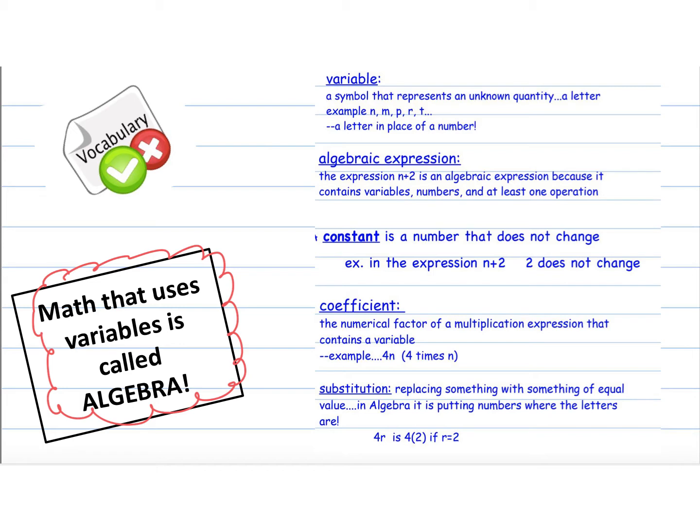So first word that I want you to write down is variable. Variable is a symbol that represents an unknown quantity, it's a letter. So a variable, you can just write letter, meaning it stands for a number. So example is x and any letters that are in the place of a number, and you will see that when we get to our algebraic expressions.